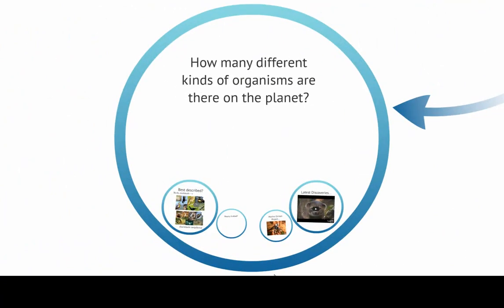An important question in biology is: how many different kinds of organisms are there on the planet? And the short answer is we don't know. Probably somewhere between 10 and 100 million different species on planet Earth. If you're writing that number down, you might be scratching your head and thinking, wow, that's a really huge range — and it is.